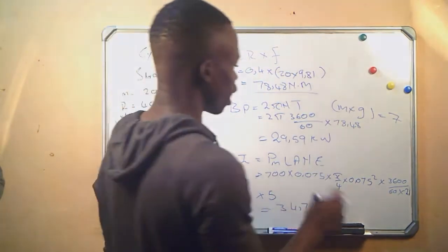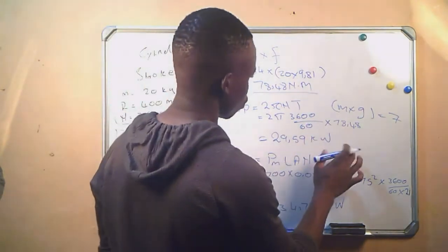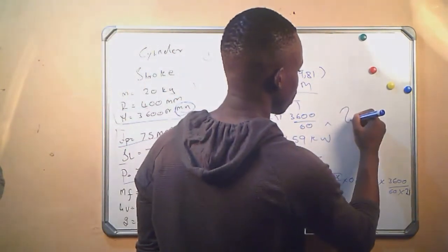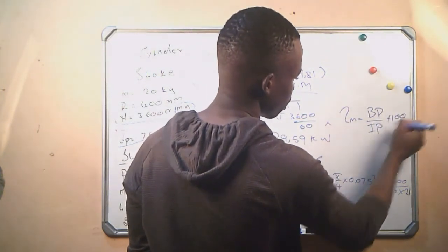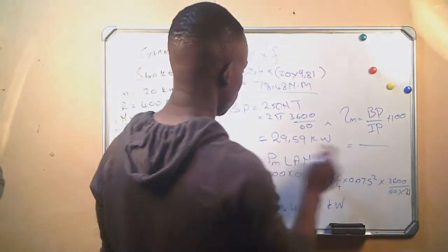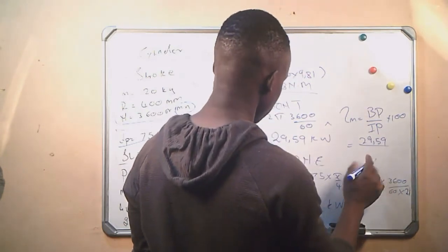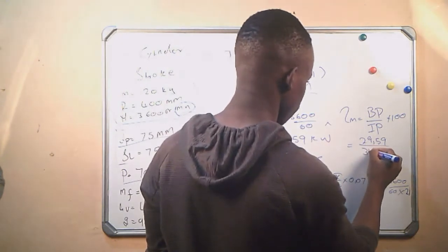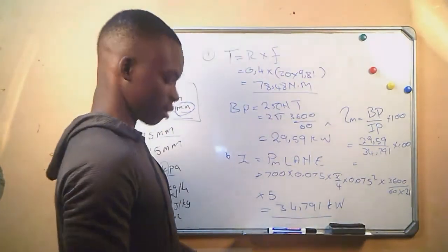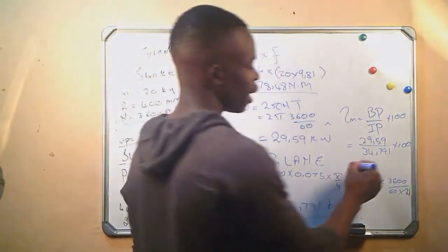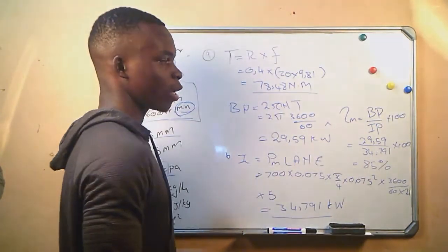And the mechanical efficiency. We know mechanical efficiency equals brake power divided by indicated power times 100. Brake power is 29.59, indicated power is 34.791 times 100, which gives us a mechanical efficiency of 85 percent. And then we go to question number three, calculate the indicated thermal efficiency.